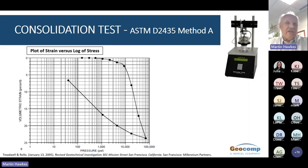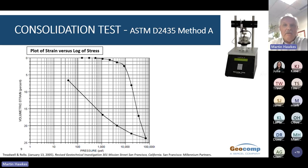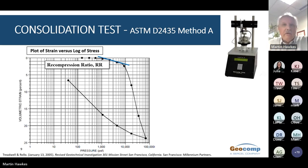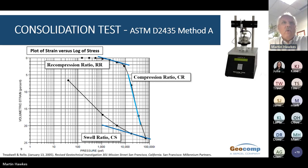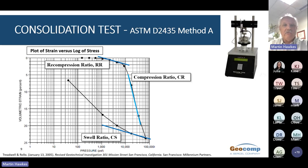This slide shows the results of a typical 1D consolidation test, or oedometer test, performed on a sample from the Old Bay clay at the location we're discussing. From this test we can determine the compression parameters: the recompression ratio, the compression ratio, and the swell ratio. In the analysis, we usually set the swell ratio equal to the recompression ratio. The stress at which recompression changes to compression is called the pre-consolidation stress, or maximum past pressure. The estimated pre-consolidation from this test is about 10,800 PSF.